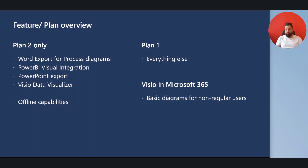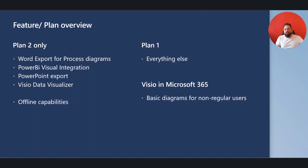In very short: if you need Word export for process diagrams, Power BI integration, PowerPoint export, Visio Data Visualizer (which means you give Visio an Excel file and it creates a diagram for you), or offline capability — that's Plan 2. Everything else for regular Visio users is Plan 1. And for those users who I personally call the 'now and then' Visio user, who occasionally need to create a basic diagram, Visio in Microsoft 365 is the right tool.